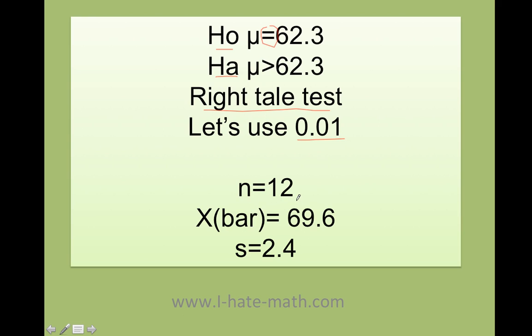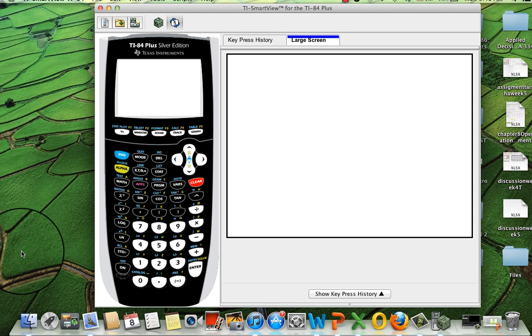I know that n equals 12 because we tested 12 supermodels. The x-bar, remember that we got all of them and we measured them, is 69.6. And the standard deviation is 2.4.